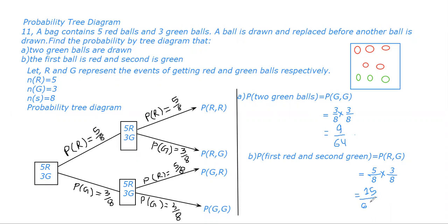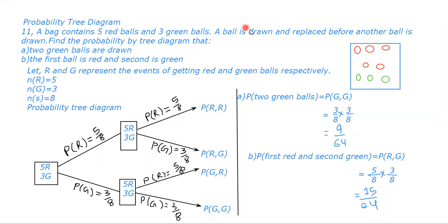In the case of with replacement, we don't have to reduce. First red is 5 by 8, green is 3 by 8; again red is 5 by 8, again green is 3 by 8 — the same throughout. If it was given without replacement, then we would have to subtract. Okay, let's see the next question.